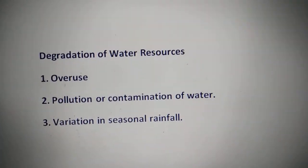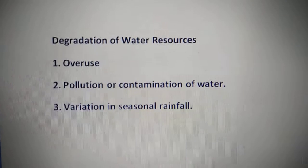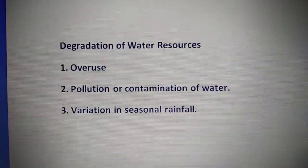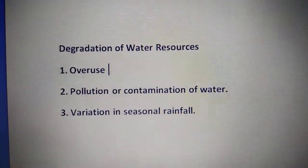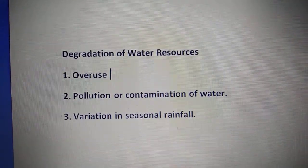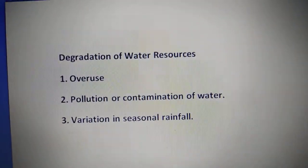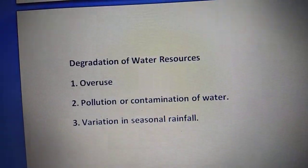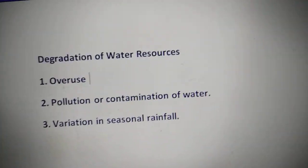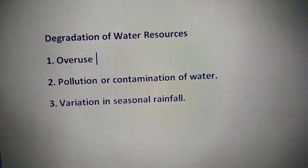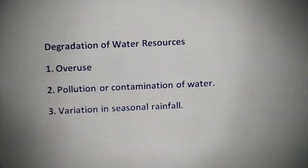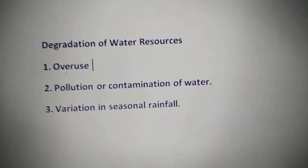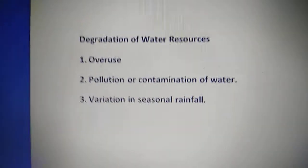Let's see how degradation of water resources takes place. Humans use huge amounts of water not only for drinking and washing but also in production — water for agriculture, industry, generating electricity through reservoirs of dams, and other usages. Increasing population, rising demands for food and cash crops, increasing urbanization, and rising standards of living are the major factors leading to shortage of fresh water, causing water sources to dry up or leading to water pollution.